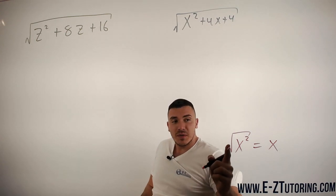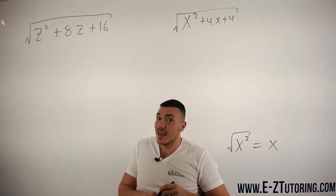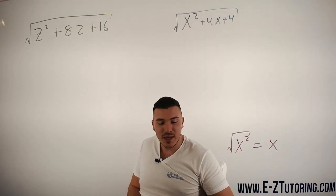So a square root and a square will always cancel each other out. This is something very important to know before we do this.